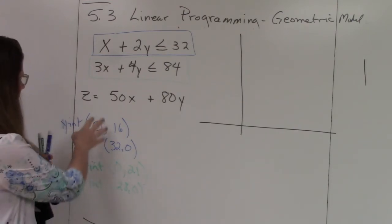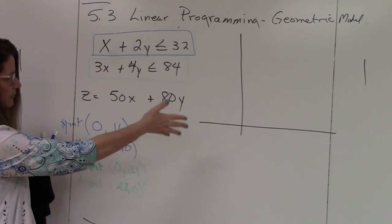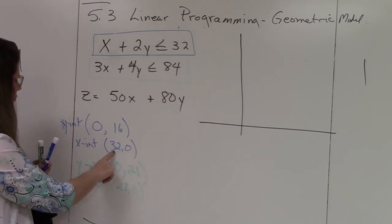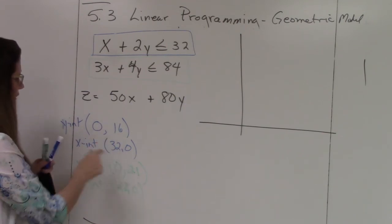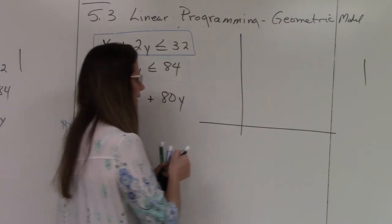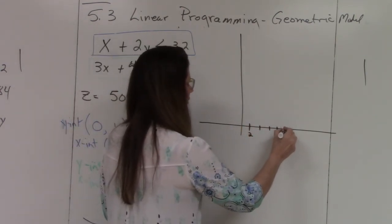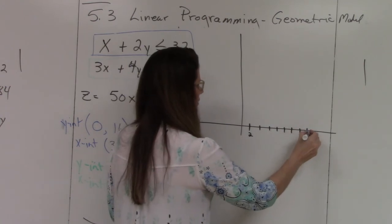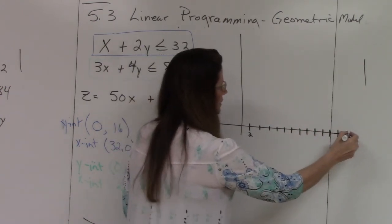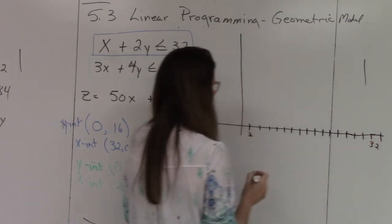So I have my intercepts, now I can graph. The blue line - I'm going to look at my values and fit my graph to these values. The largest X value is 32, the largest Y value is 21. So I'm going to put in my values, going by 2's. So 2, 4, 6, 8, 10, 12, 14, 16, 18, 20, 22, 24, 26, 28, 30, 32, 34.